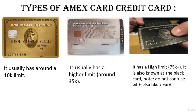Amex card types: the full form of Amex is American Express. The Gold Amex has a limit of $10,000. The Platinum has a $35,000 limit. The high-end Black Amex card has $75,000+ and is very powerful. Always be aware of which card you are buying and whether it is risky. Be careful while buying these types of cards.